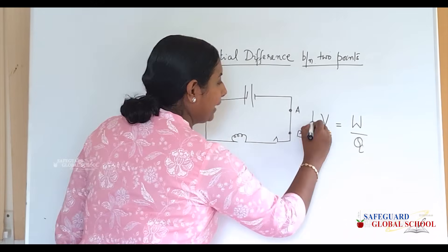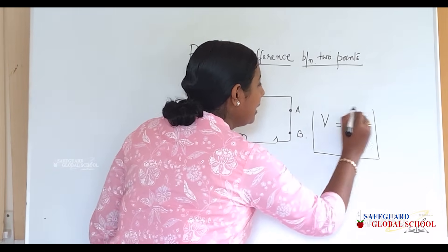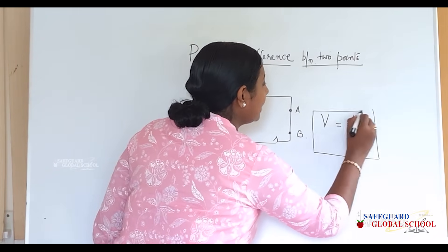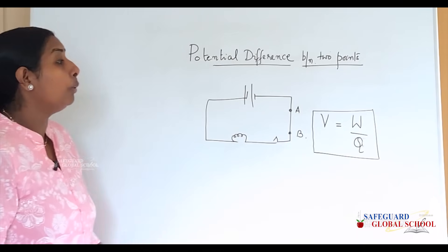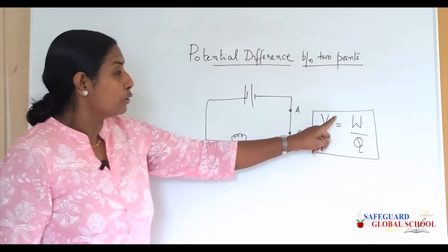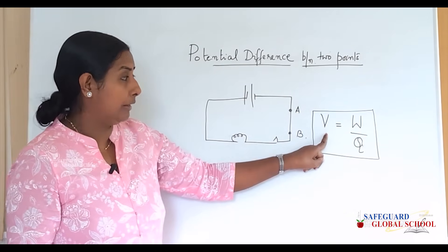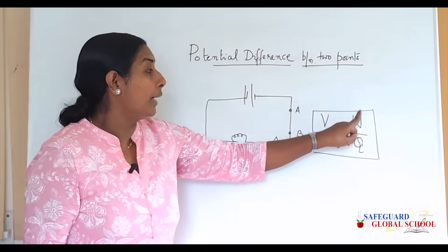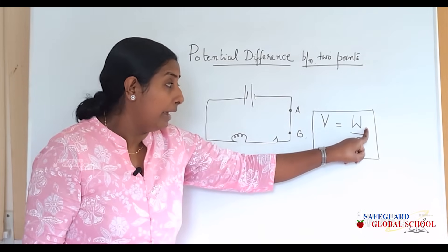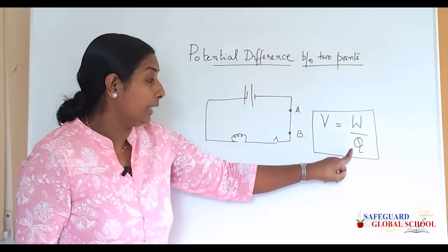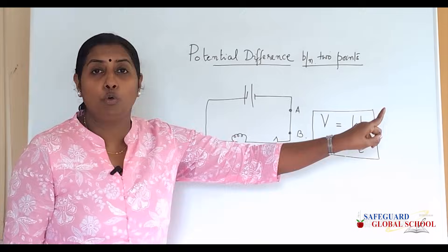The mathematical equation for potential difference is V equals W divided by Q, where V is the potential difference, W is the work done, and Q is the charge moved.